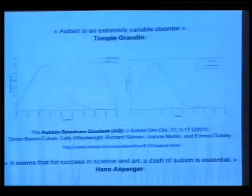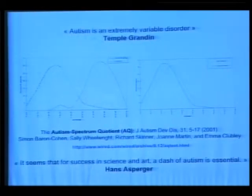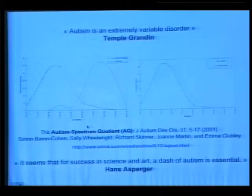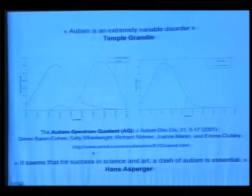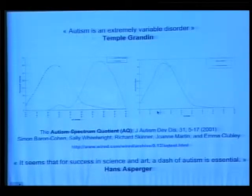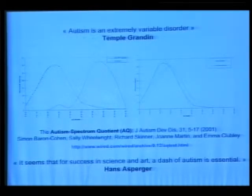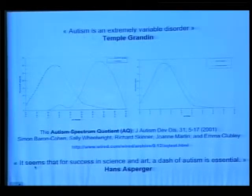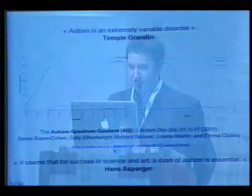Like Temple Grandin, I think autism is an extremely variable disorder, and I really like the idea that it's normally distributed within the population. If you want to know where you are on the autism scale, you can just check online and see where you are - somewhere in the non-autistic population, it looks like. Like Hans Asperger, it seems that for success in science and art, a dash of autism might be essential. I'm not here to normalize anybody - I want to understand what's going on.